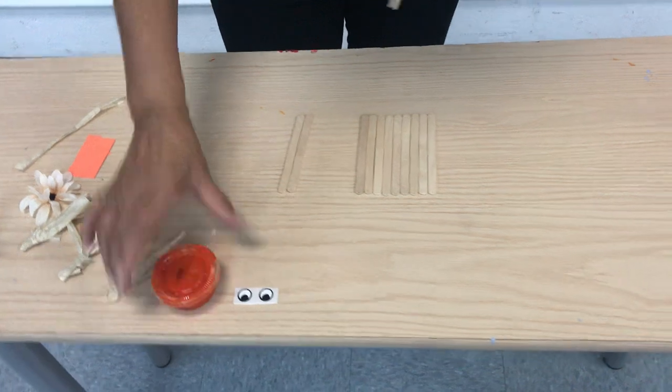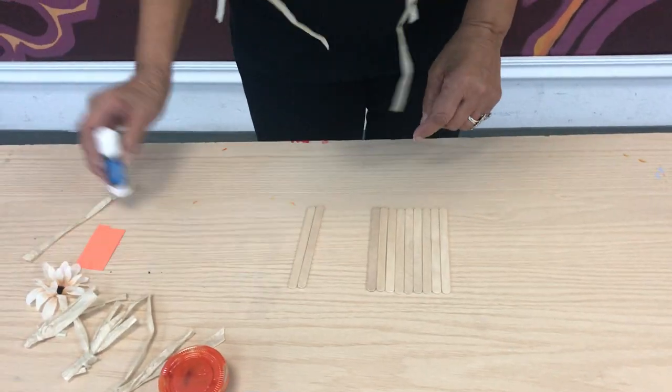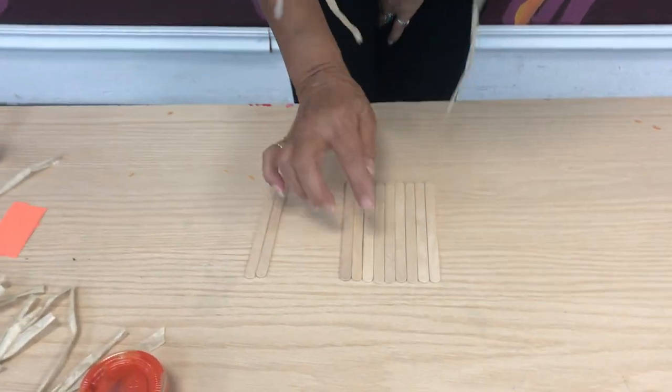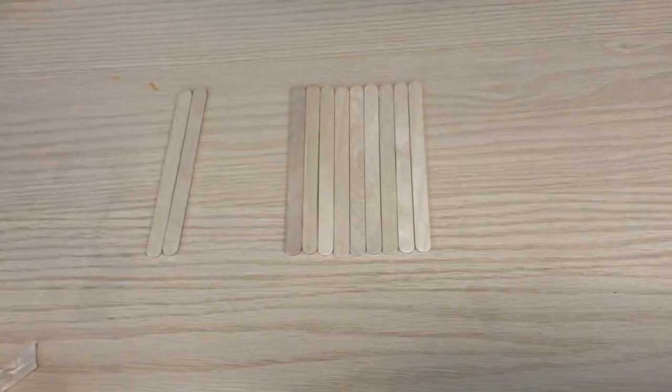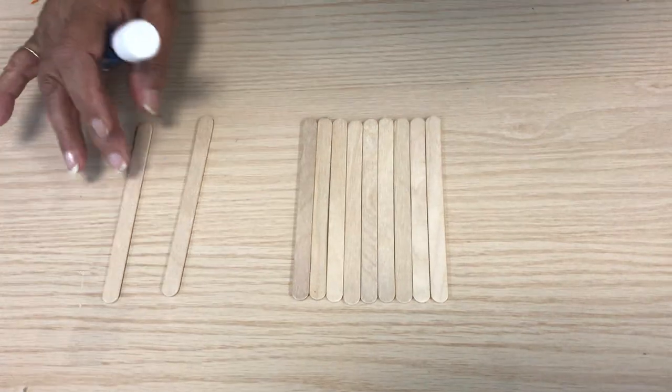You're going to start by lining up your nine popsicle sticks so it looks like a square. Vamos a juntar nueve palitos de madera para que se vea como un cuadrado.